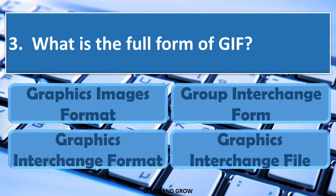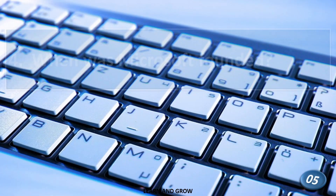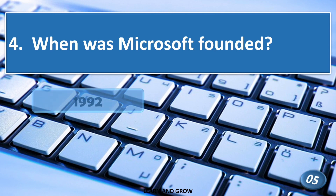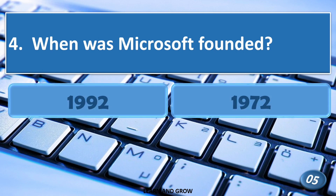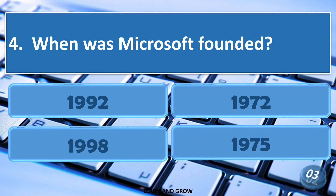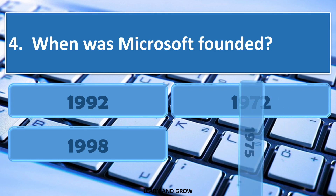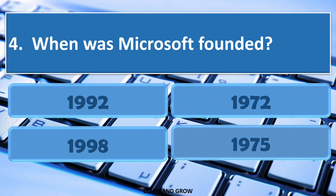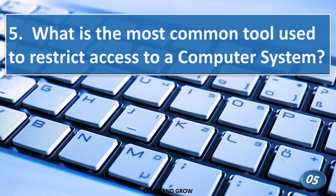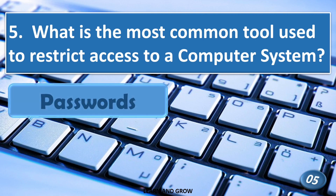The full form of GIF is Graphics Interchange Format. When was Microsoft founded? The right answer is 1975. What is the most common tool used to restrict access to a computer system?